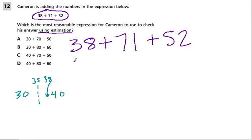So if I'm going to estimate 38, I'm going to round it up to 40. It's much closer to 40 than it is to 30. So I would cancel out A and B. Rounding 38 down to 30 would be less reasonable than rounding it up to 40.